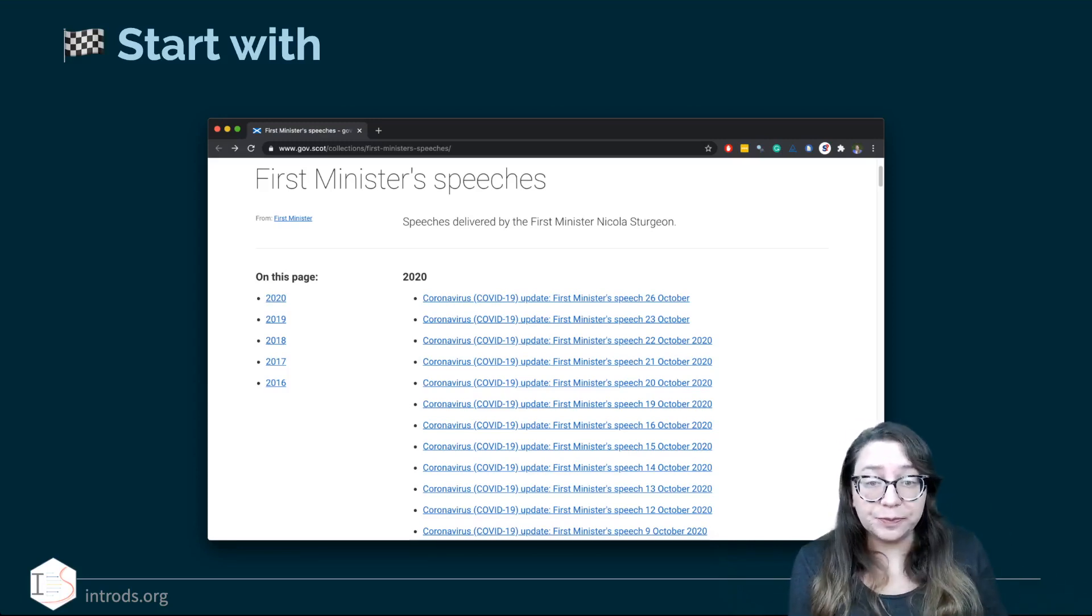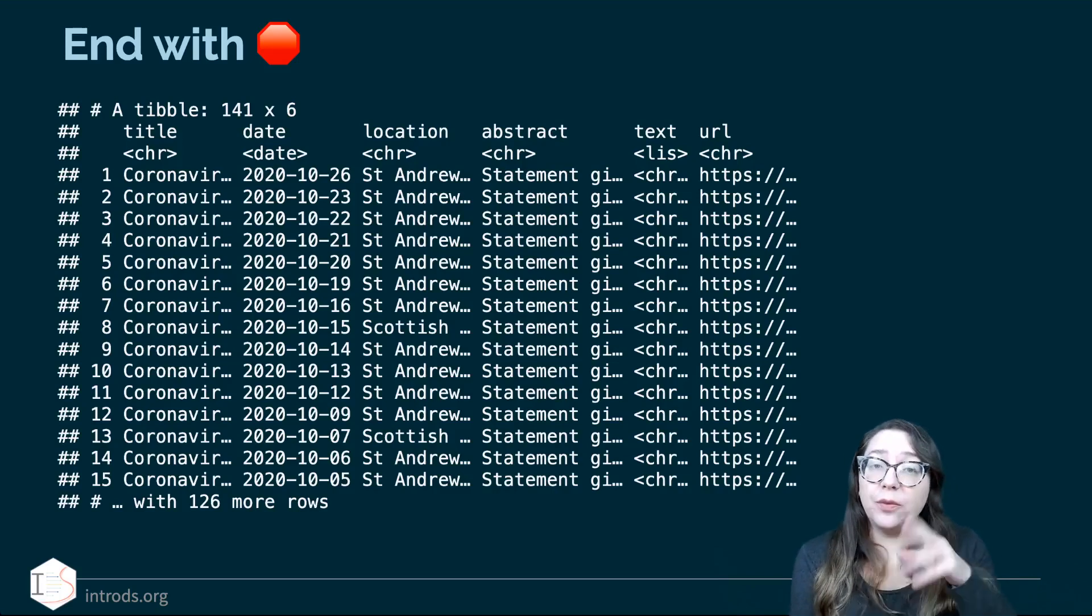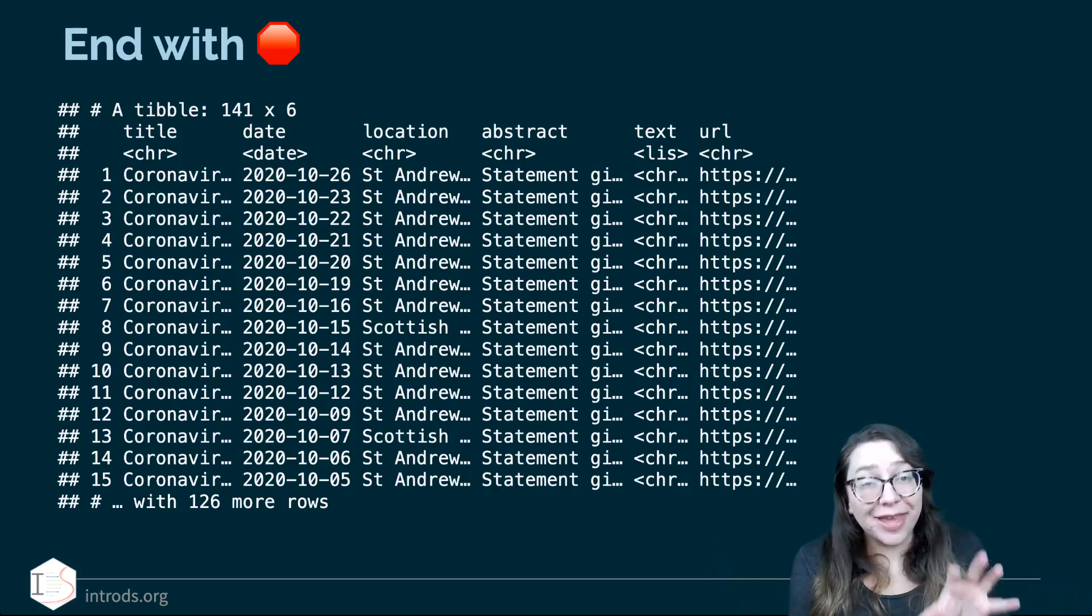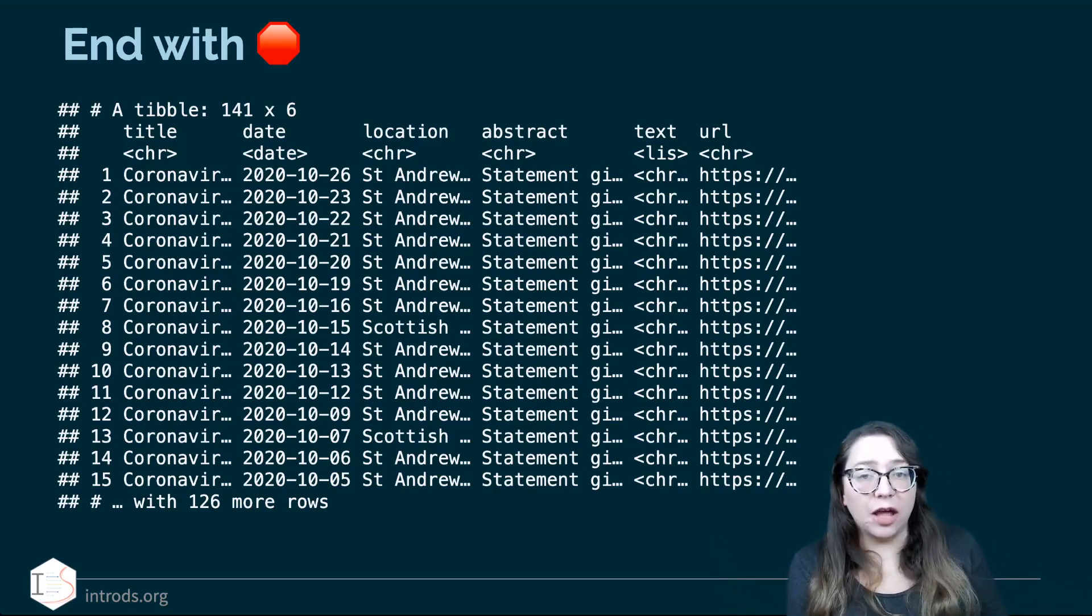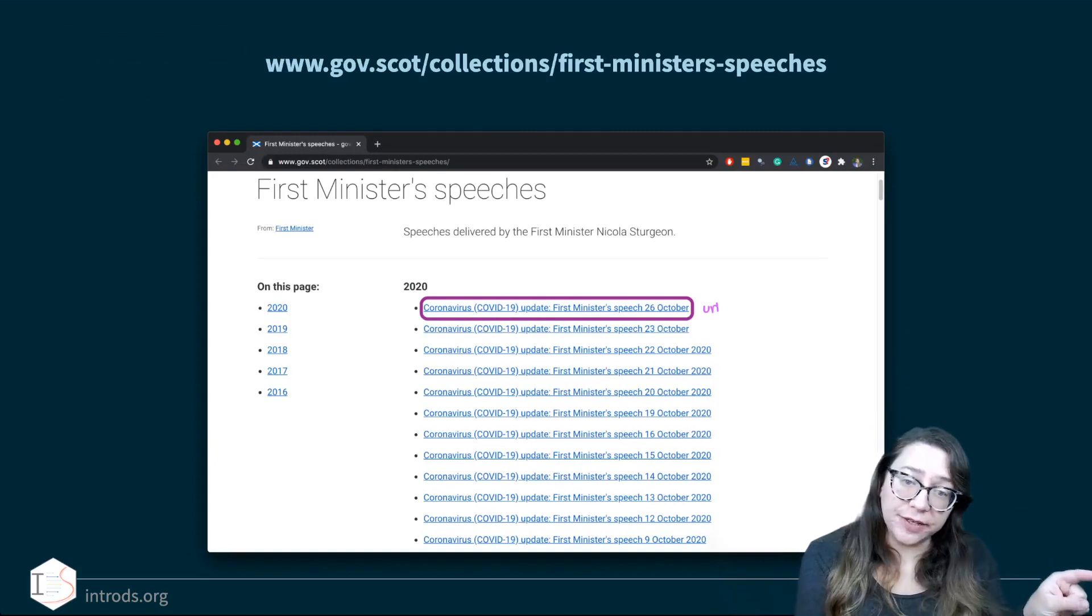So we start with this and we want to end with a tibble. A tibble where each row is one of these speeches and we have some information on particular attributes like its title, date, location where this speech was given, the abstract, there's usually a little abstract on top and then the actual text of the speech as well as the URL where we got this information from. So this is our end goal. A tibble with six columns and the number of rows equal to the number of speeches she has given.